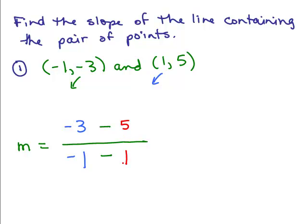Now be careful, the denominator is not 0. This is negative 1 minus 1. Remember that means negative 1 plus negative 1. So what do we have here? Negative 3 minus 5 is negative 8, and the denominator is negative 2. This has a slope of 4.